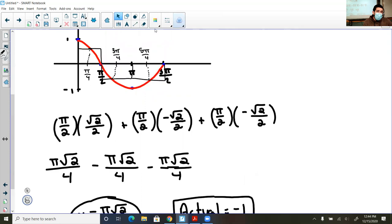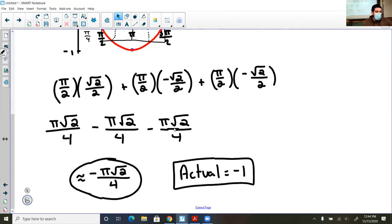And the actual area under the curve was negative 1. So in this case, Riemann sums did a pretty good job. They were only 11 hundredths of a value off from the actual area.